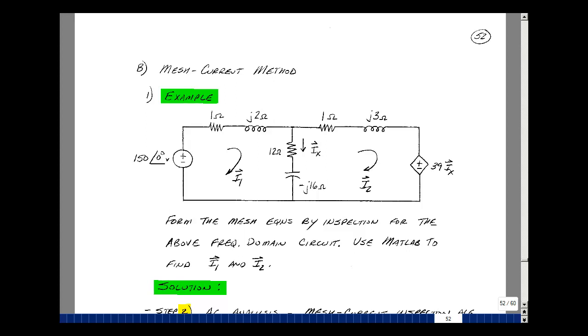Consider the following frequency domain equivalent circuit, where I've got one independent voltage source, one dependent voltage source, three resistors, two inductors, and a capacitor. And in the frequency domain, we have the impedances of each element.